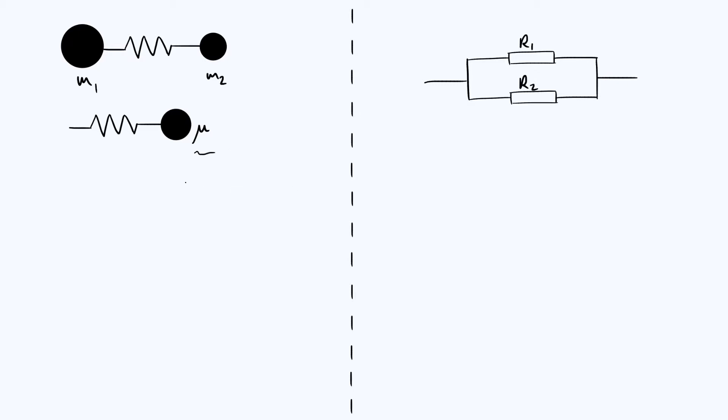I'm going to call that new mass mu here, and in this other system that we're comparing it to, the left end of the spring is just fixed in place, maybe it's attached to a wall or something. The interesting thing is, if you define your new mass mu according to the relationship one over mu equals one over m1 plus one over m2, then you find that these two spring systems behave in similar ways.